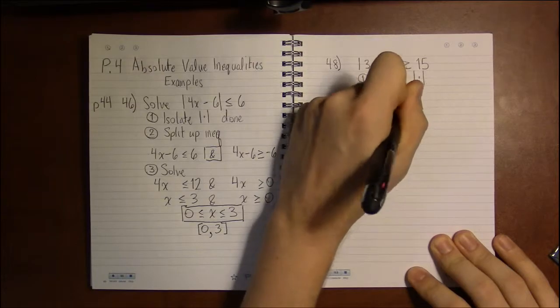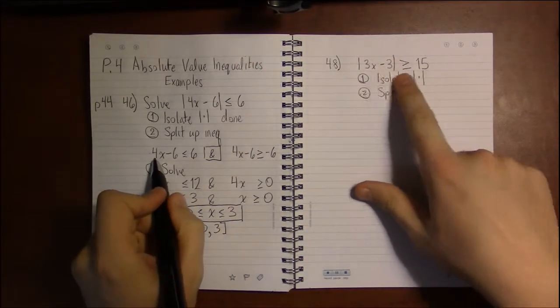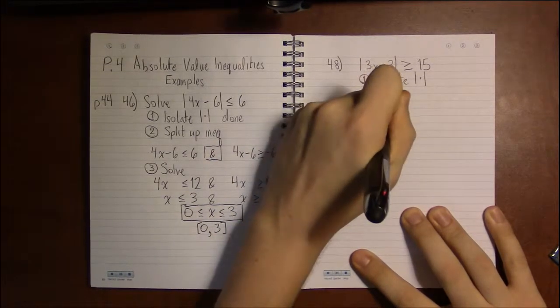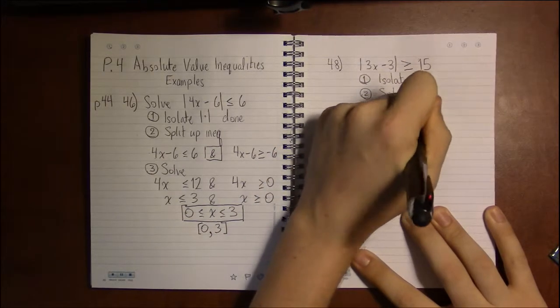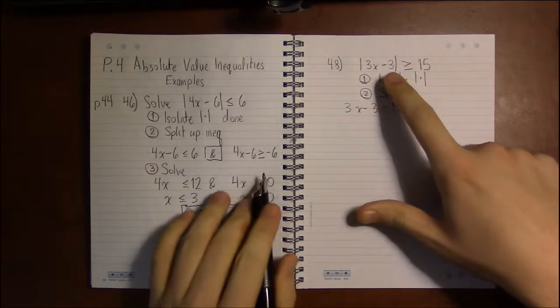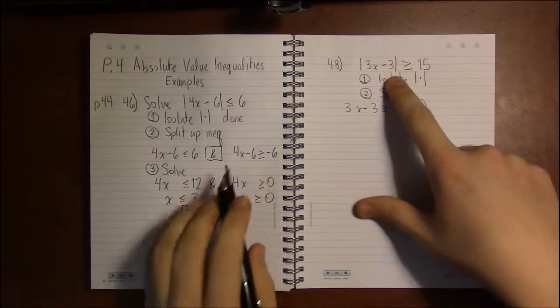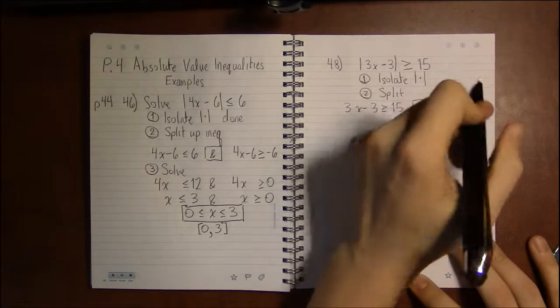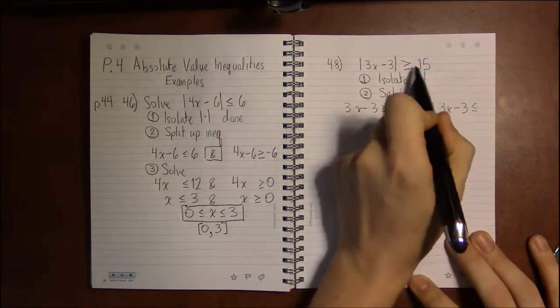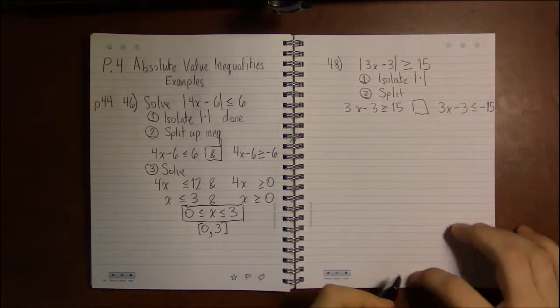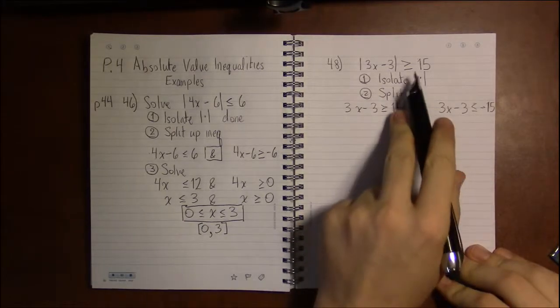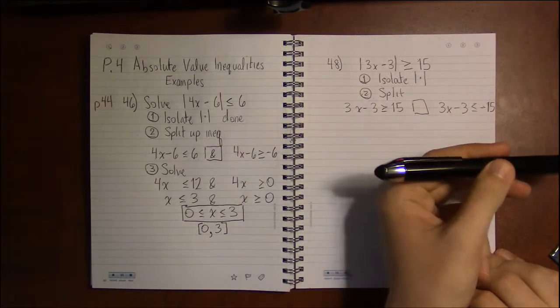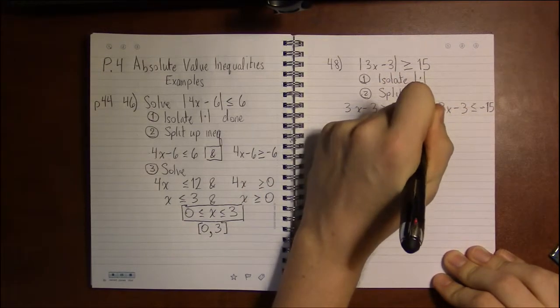Now the split is slightly different in this case. We will write down the exact same thing just without absolute value bars: 3x minus 3 is greater than or equal to 15. Now the second inequality, there's no absolute value bars, so it's 3x minus 3. The inequality flips, so greater than or equal to becomes less than or equal to, and this 15 gets a negative in front of it. Now, what goes in the box? Well, it's greater than or equal to—the inequality is pointing to the right. What goes in this box is OR.